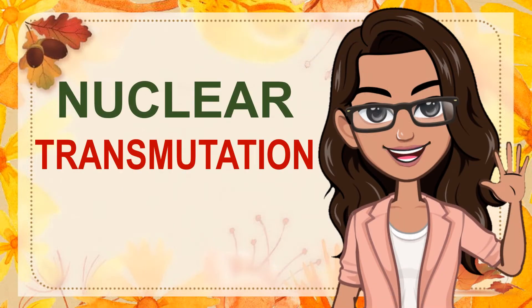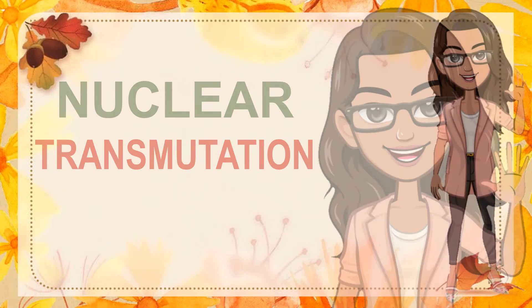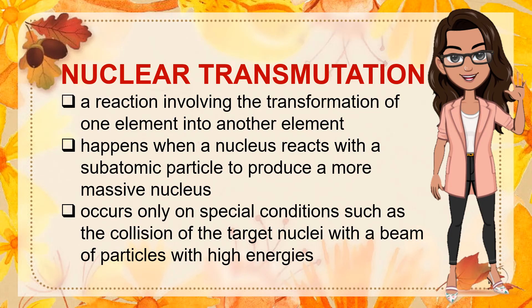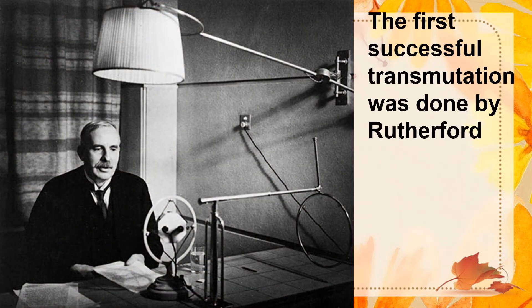Next is nuclear transmutation. A nuclear transmutation is a reaction involving the transformation of one element into another element. It happens when a nucleus reacts with a subatomic particle to produce a more massive nucleus, occurring only under special conditions such as the collision of target nuclei with a beam of particles with high energies. In 1919, the first successful transmutation was done by Rutherford. He bombarded nitrogen nuclei with alpha particles to form oxygen nuclei. In the next decades, other nuclear reactions were discovered by bombarding other elements with alpha particles.